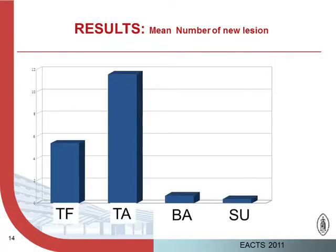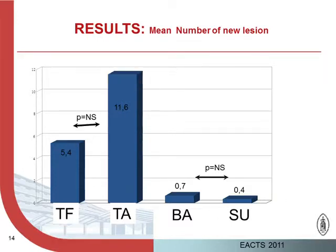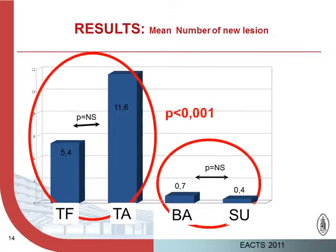If we look at the mean number of new lesions, we see 5.4 new lesions in the transfemoral group, and even more in the transapical group, and a very low rate of lesions in the balloon group. Again, there is no difference between balloon and surgery, and between TA and TF, but a clear difference between TAVI and non-TAVI groups.